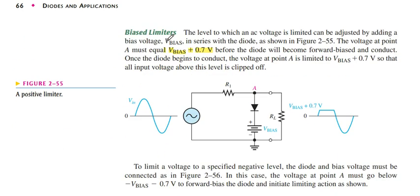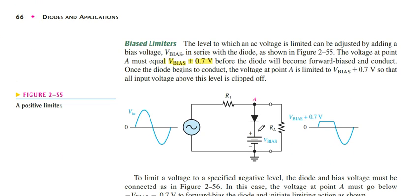Now the biased limiter. When we connect a diode with a battery, there are four types of connections. Number one: the negative side of the battery is connected to the positive side of the diode, so both voltages are added. As both voltages are added, we increase the clipping level of the input voltage.